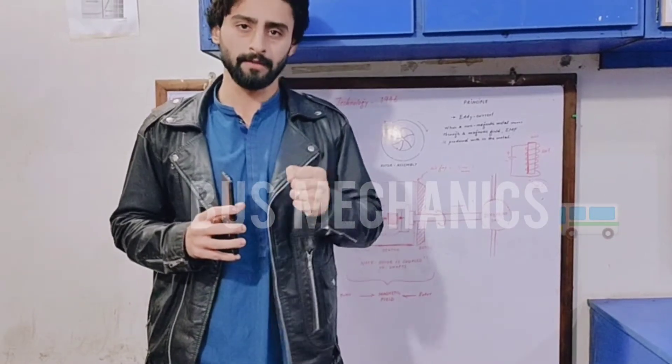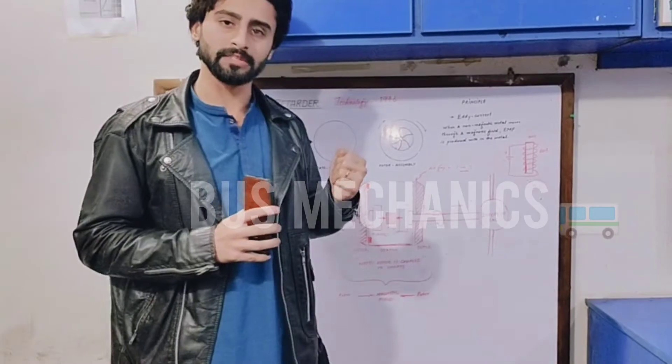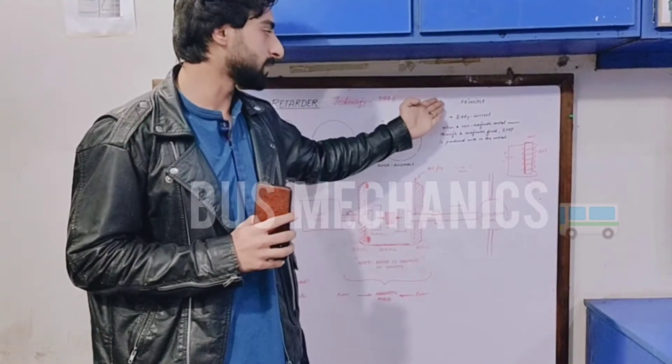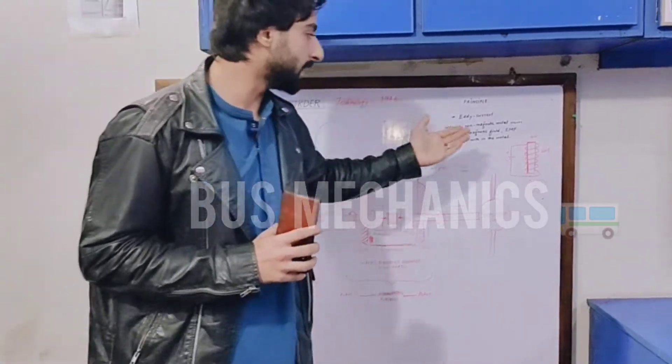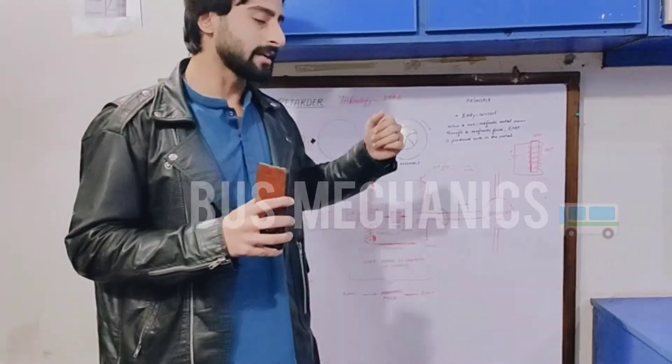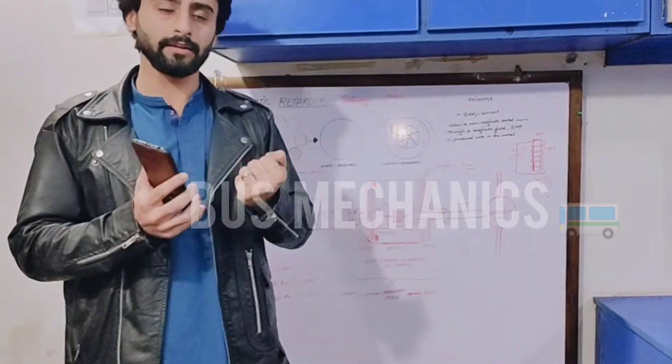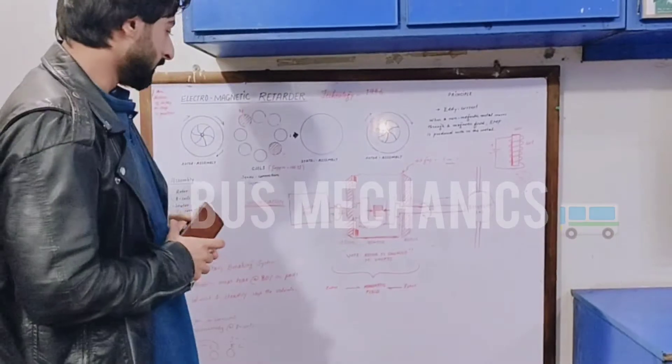Let's discuss the principle of retarder. It works on the principle of eddy current which is stated by Faraday's law. It states that when a metal is moved in a magnetic field, electromagnetic charge is produced in it which attracts it towards itself. Here's the diagram of the principle.